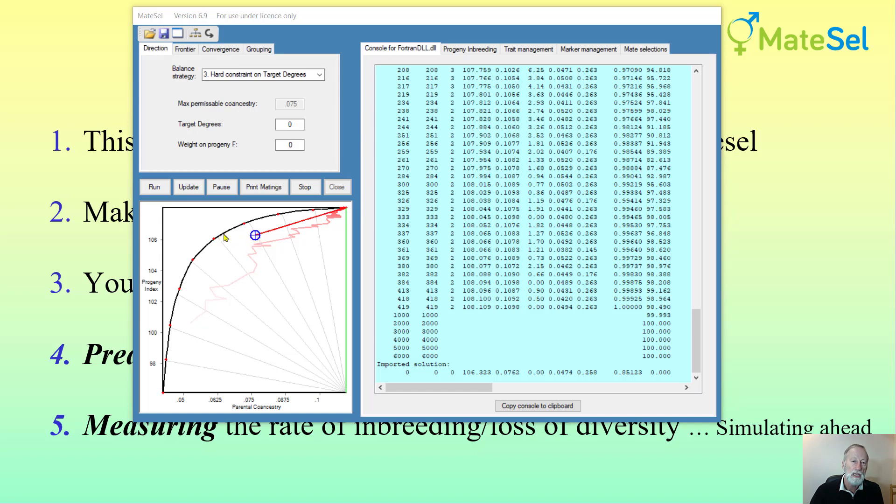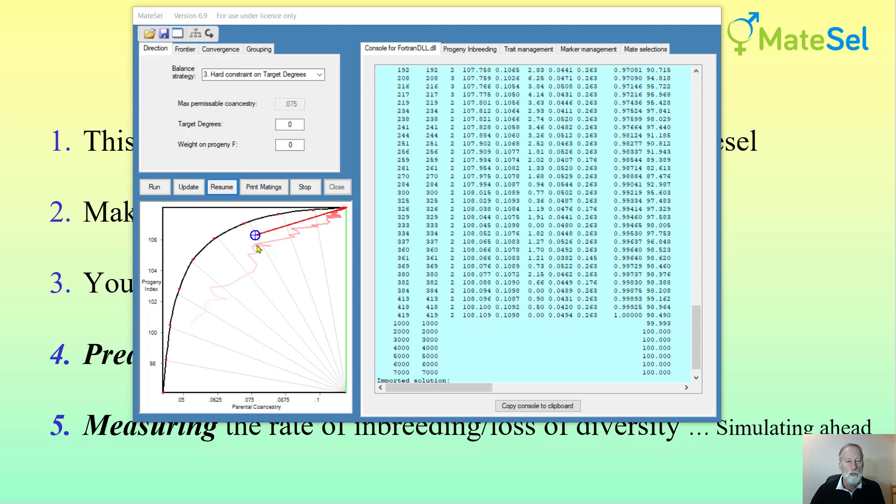How come we allow males to have more matings and yet achieve the same level of diversity and get more gain? MateSel is allowing the very high index animals to have more matings and is making compensations elsewhere in the breeding program by spreading the use over a greater number of males. This is called optimal contributions and gives us this extra result towards the frontier, either more gain or more diversity.